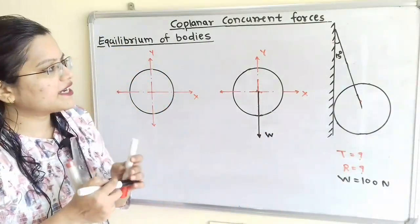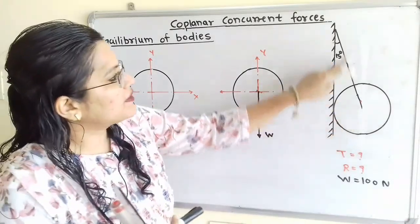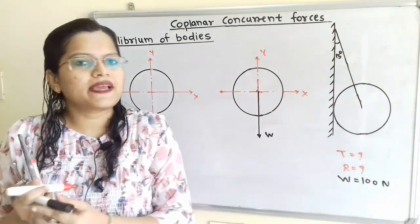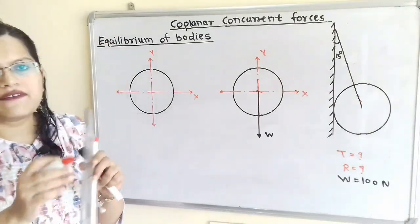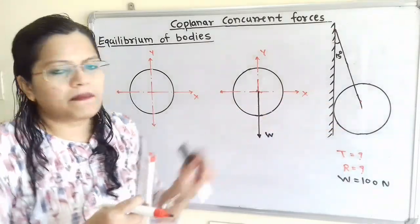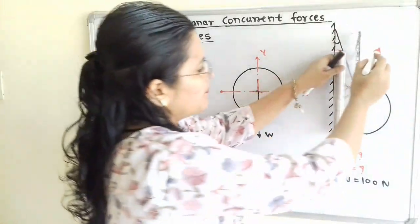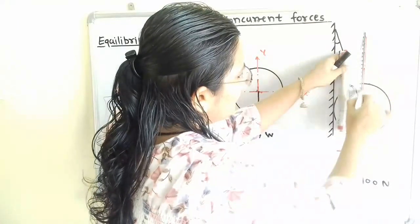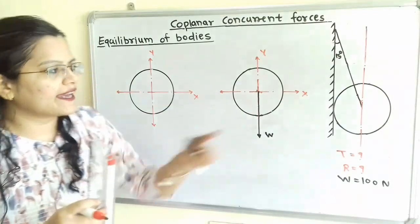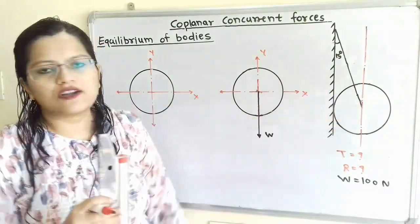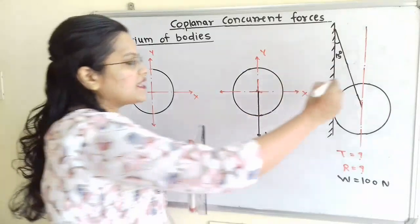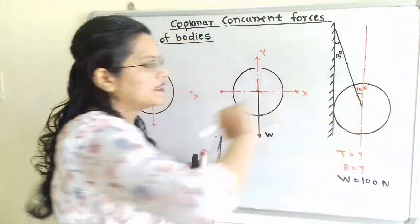This sphere is connected to the string, which makes an angle of 15 degrees with the vertical wall. I will make a construction by drawing one parallel line to this vertical wall passing through the center, shown as a dash-dot line. Since these two lines are parallel to each other with a common inclined line, this angle is also equal to 15 degrees.